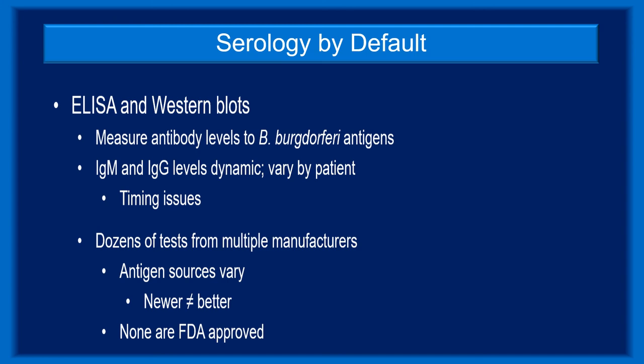Antibody production is a dynamic process, and a single sample may not accurately reflect the clinical picture due to timing issues and patient variables. There are multiple manufacturers and dozens of tests on the market. Tests vary with regard to their antigen sources. Whole-cell sonicated tests are the accepted standard, but newer tests using purified or recombinant antigens are also available. No single test has documented superiority over the others, indicating that newer isn't necessarily better. None of the available tests are actually FDA approved.